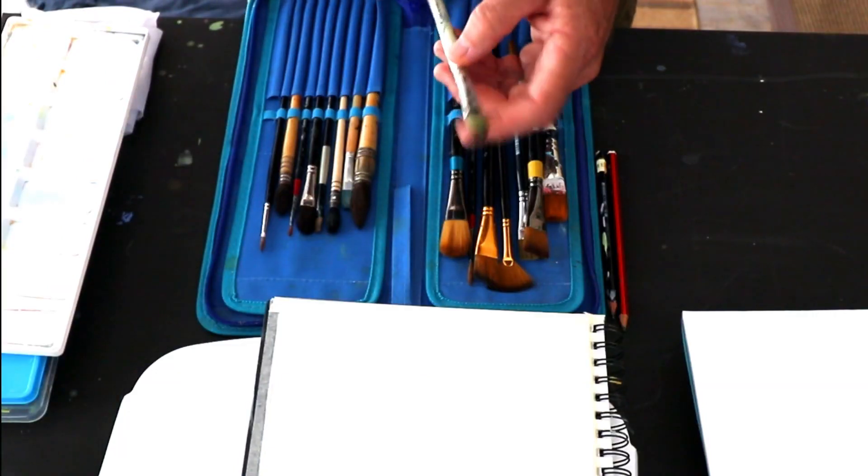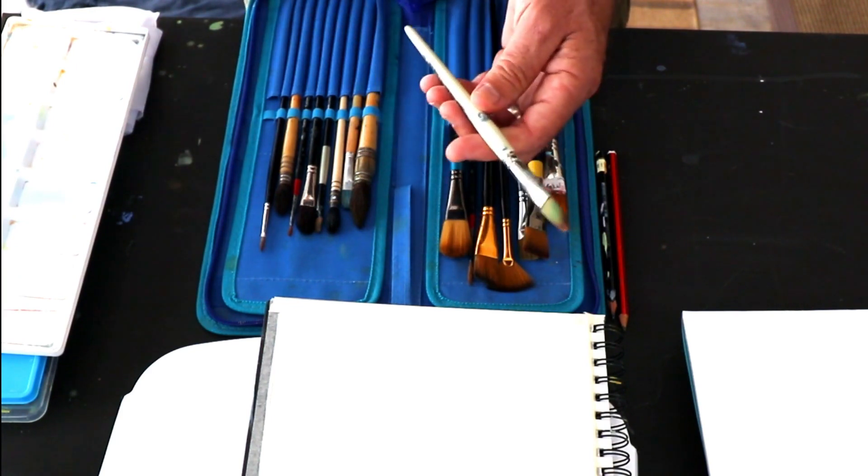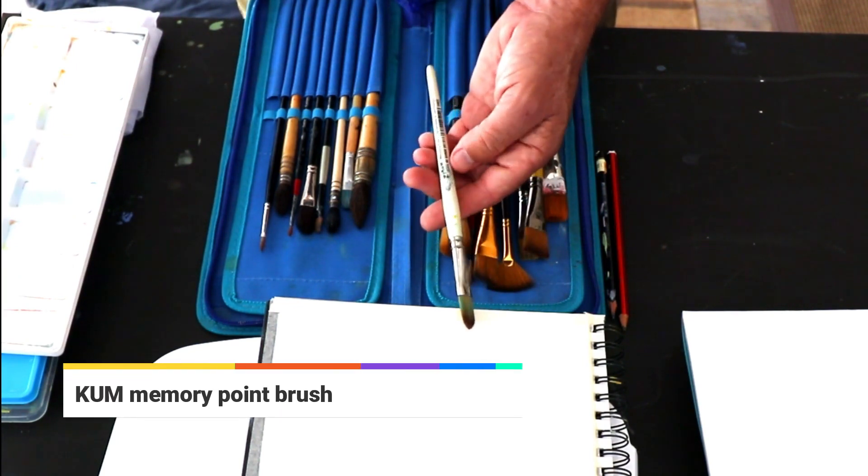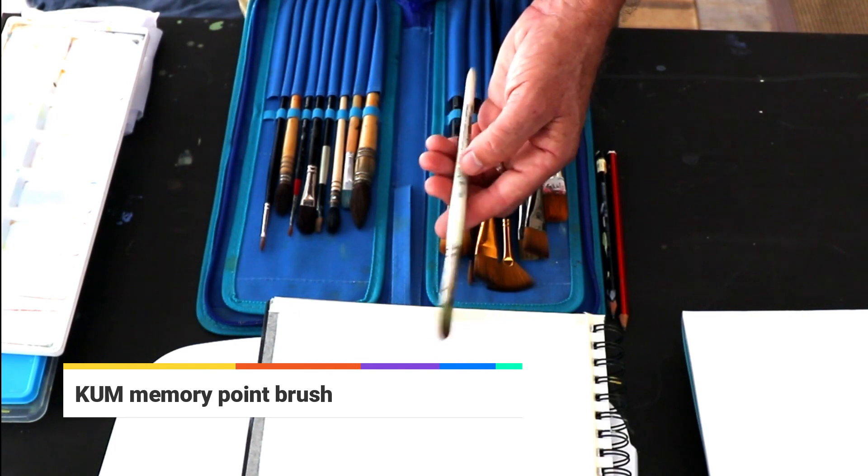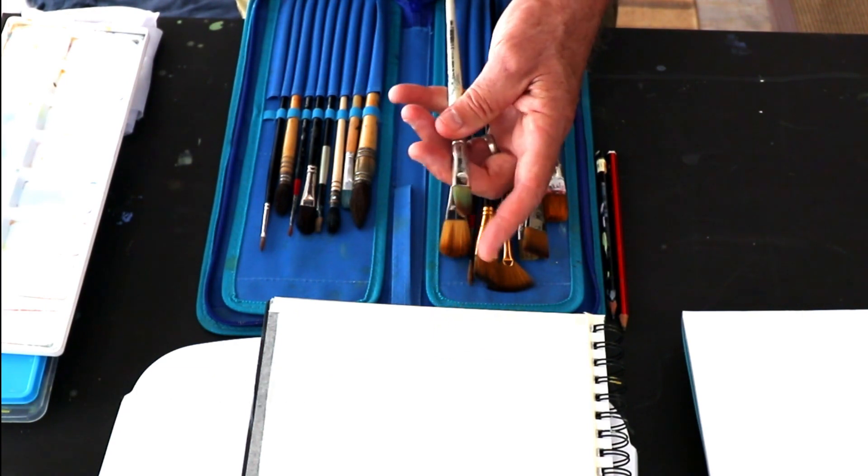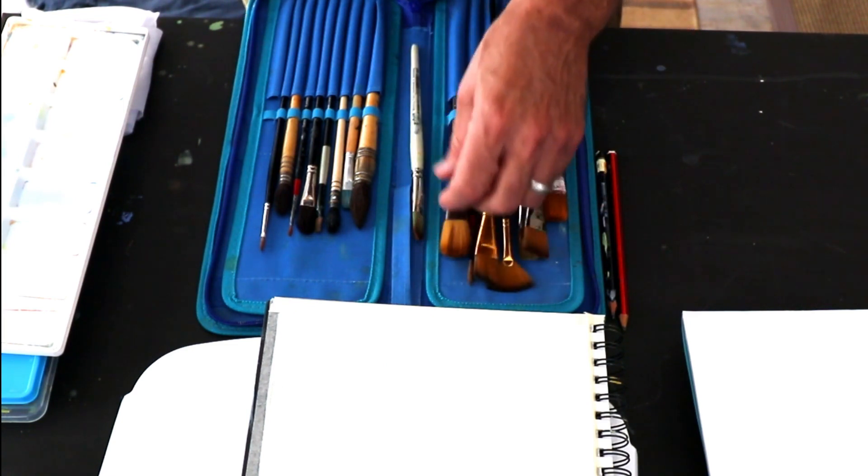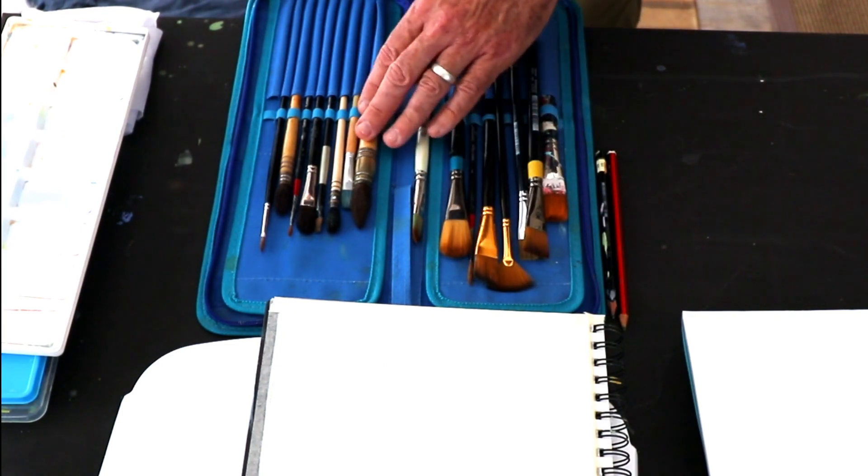For more precise shapes, I like this memory point brush. It's made by a German company called KUM. And as the name suggests, keeps its nice shape. It is synthetic and good for detail as well as bigger shapes.